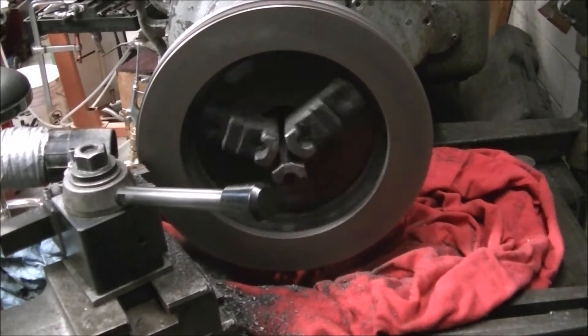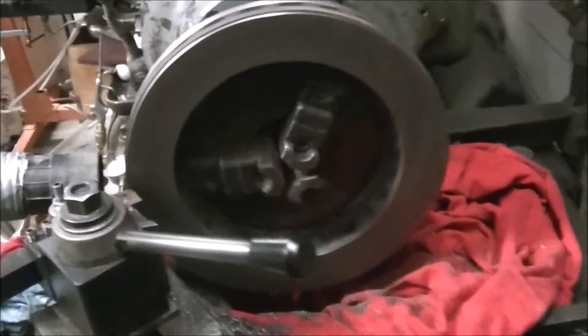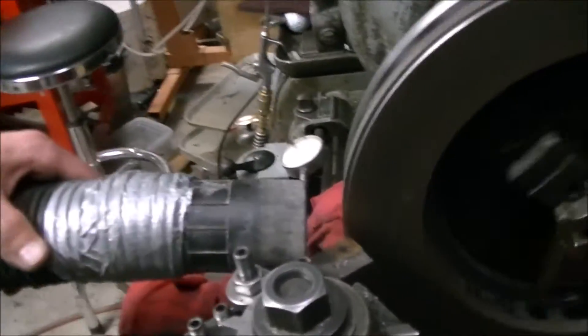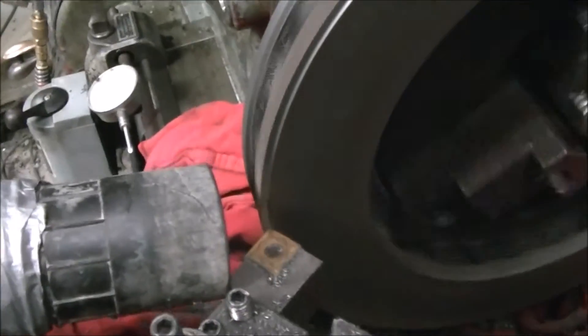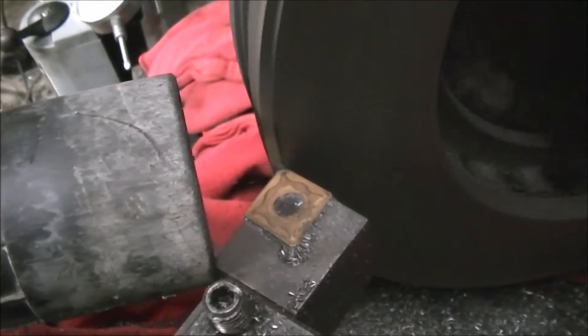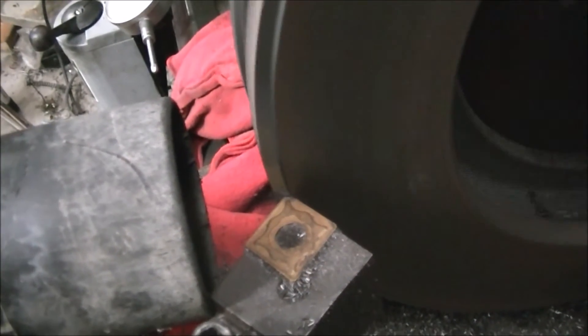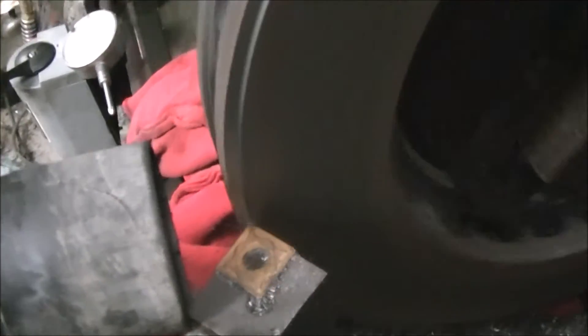Then I went ahead and turned down the other side. Again, trying to use the shop vac to control the dust. You can see I was running at a really slow speed around 65 RPM. Otherwise, the cast iron dust would be everywhere.